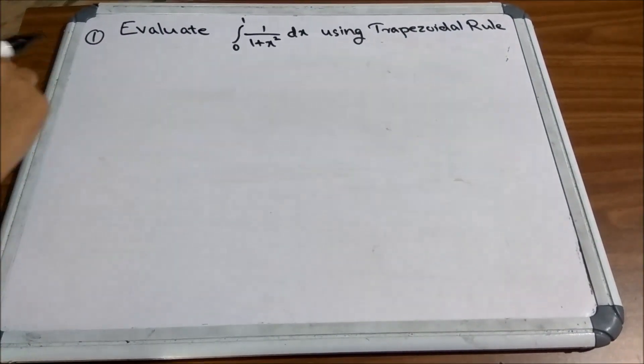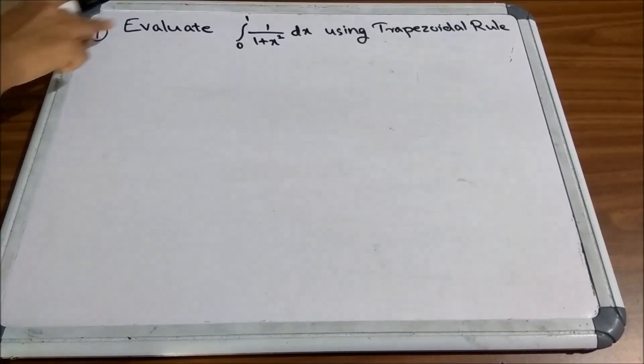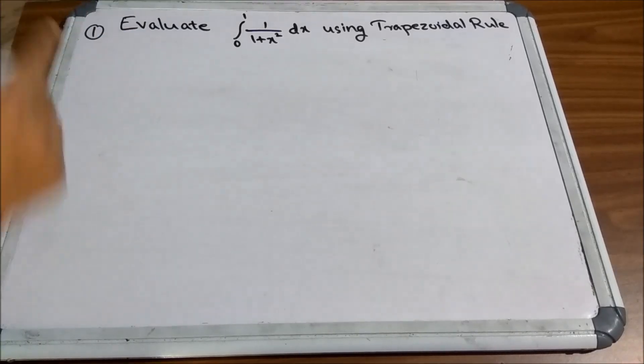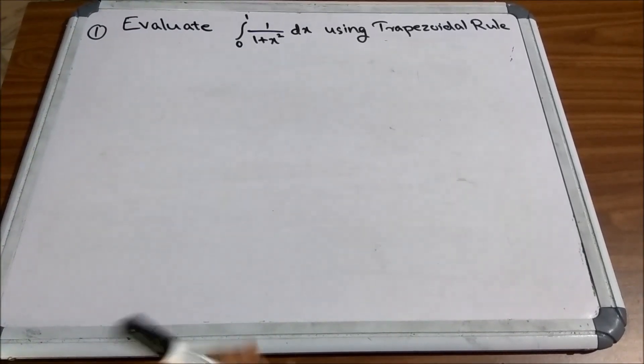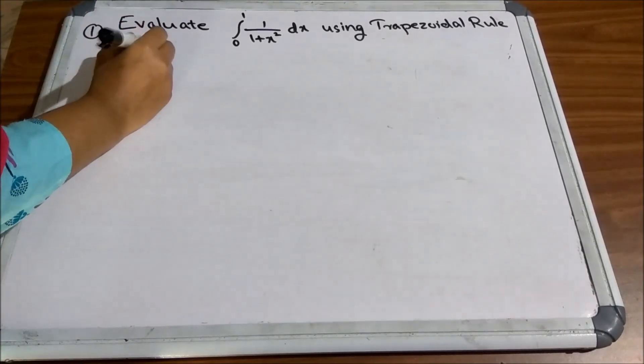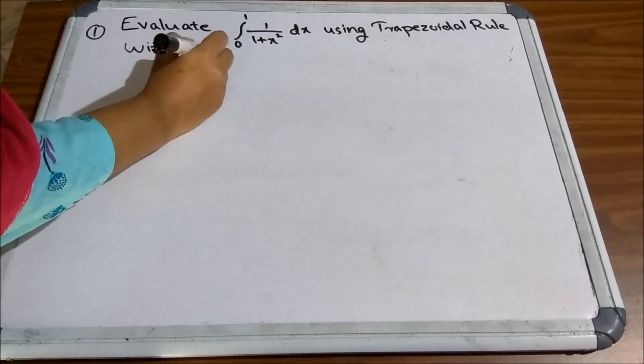Now, I will show you this with an example. Evaluate integral 0 to 1, 1 by 1 plus x square dx using Trapezoidal Rule with n equal to 5. So, the number of subintervals will be given in the question.